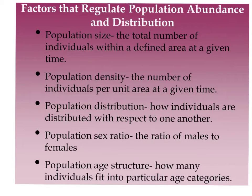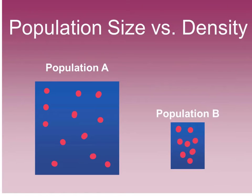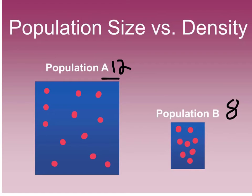Populations are dynamic — in other words, they're always changing. To understand this better, population ecologists need to look at a number of factors. We're going to look at five of those here, starting with population size and population density. I've got two populations: Population A consists of 12 individuals, Population B consists of 8 individuals. The population with a greater population size is Population A — 12 is obviously greater than 8.